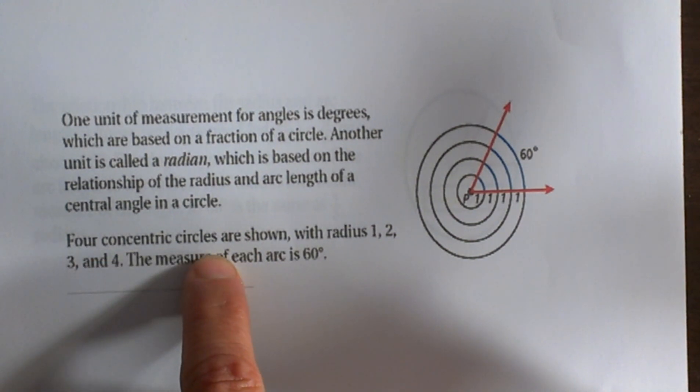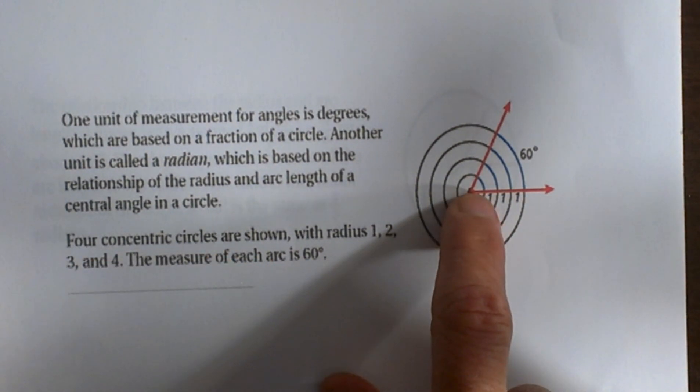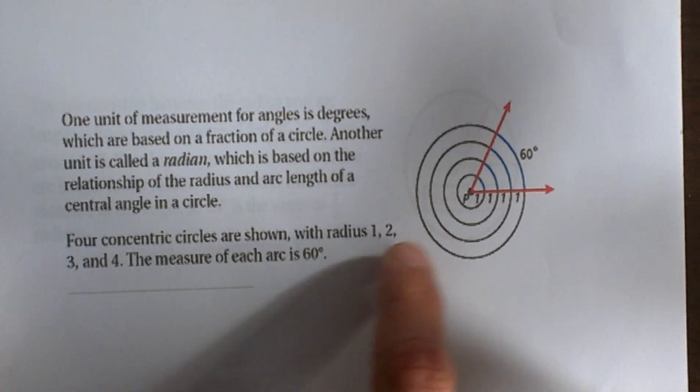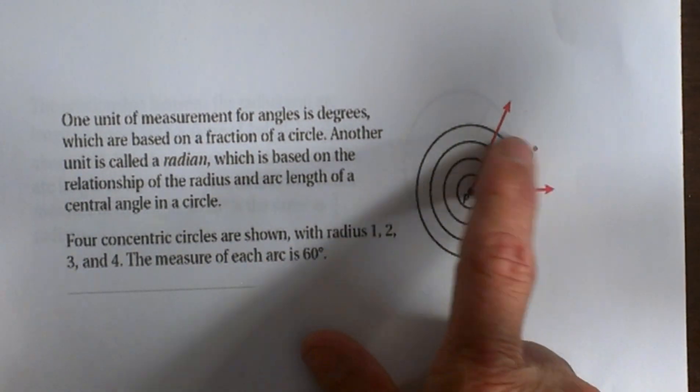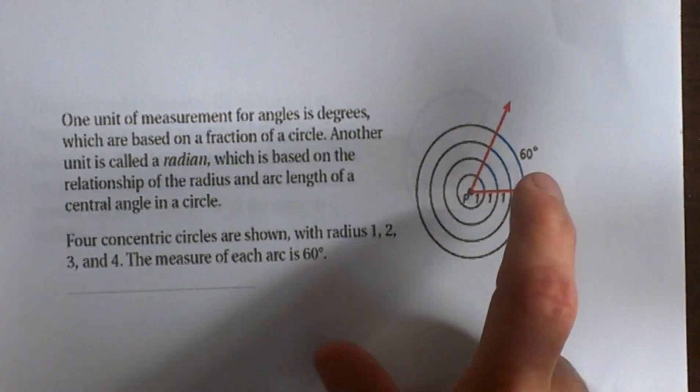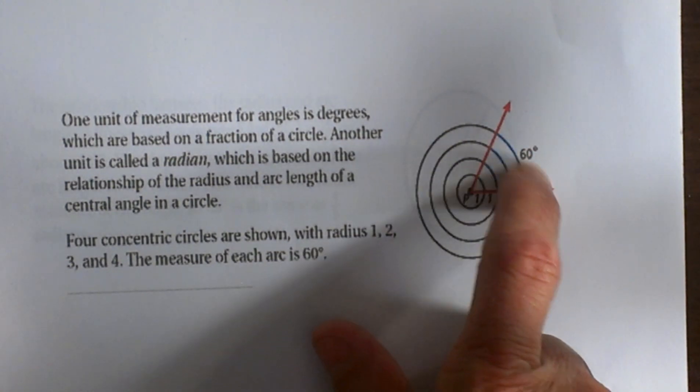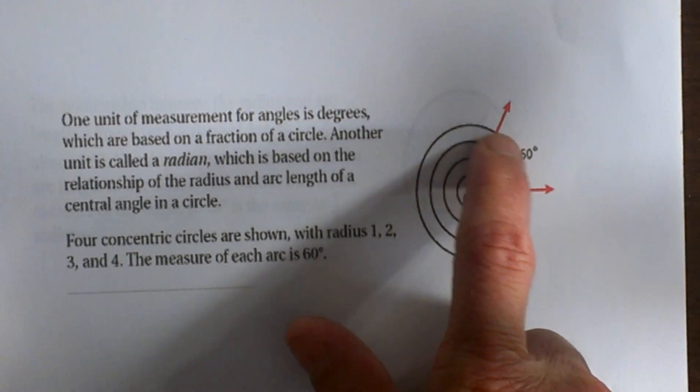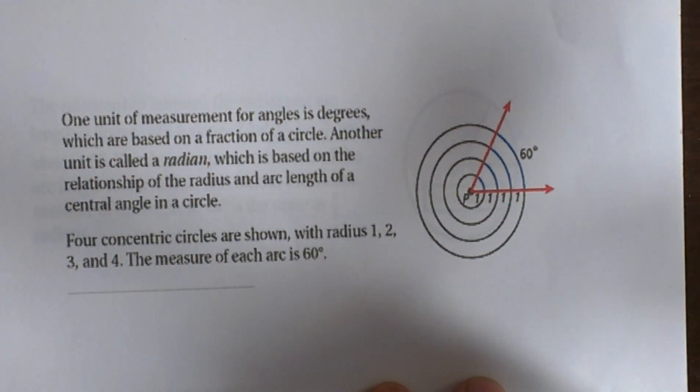We have four concentric circles, each with a radius of 1, 2, 3, and 4. The measure of the arc is 60 degrees, which is also a constant radian. The measure is not the length, it's actually the angle measure. All these angles are still 60 degrees. The central angle is still 60 degrees.